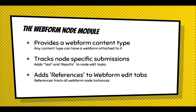The idea is you enable this relationship and you get a test tab, which you can test your webform, and a results tab where you see the results for that specific node. The key thing to walk away with is: you create a registration form and you want to reuse it on all your events on the site. So you create an event content type, you add a webform to it, and every webform node will track specific registrations for that event.